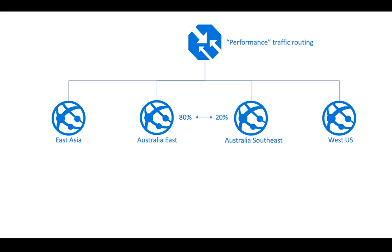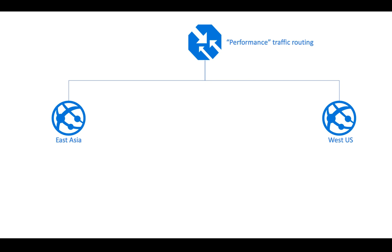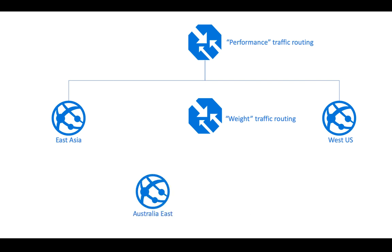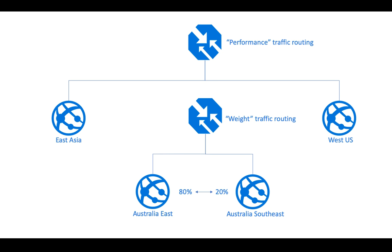Unfortunately, Traffic Manager does not allow you to configure multiple traffic routing methods for the same profile. What you can do instead is create a second Traffic Manager profile, configure weighted routing as its method, and set Australia East and Australia Southeast as its endpoints with weights of 80 and 20 respectively. You then configure this new profile as a child profile underneath the original Traffic Manager profile — making it a nested Traffic Manager profile — and the original becomes the parent profile.